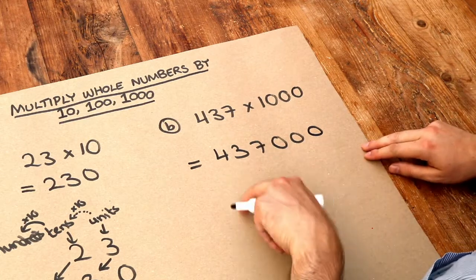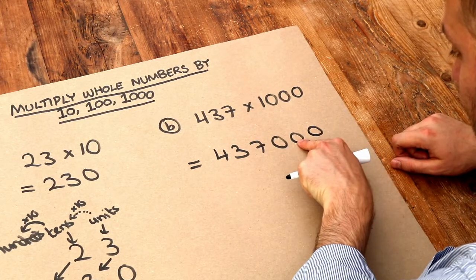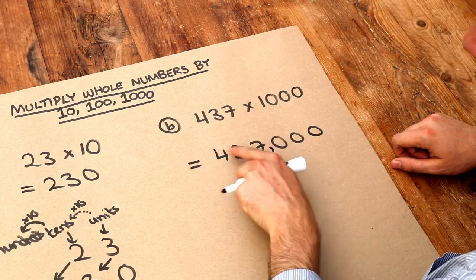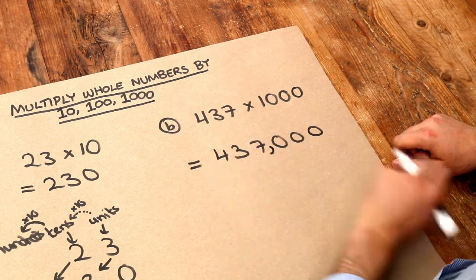And usually when we're writing big numbers, every three digits from the right, we put a comma there. So 1, 2, 3, comma, 1, 2, 3, well that's the end of the number, so we don't need another comma.